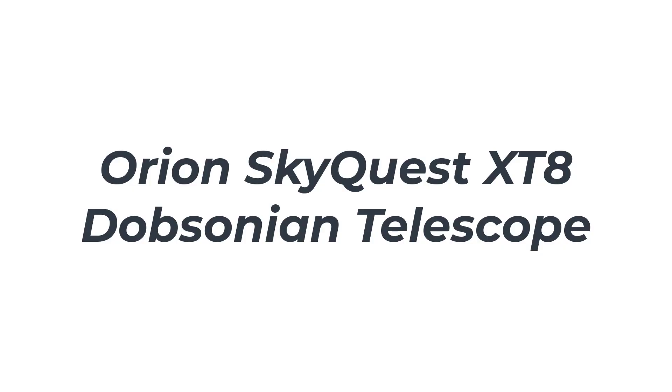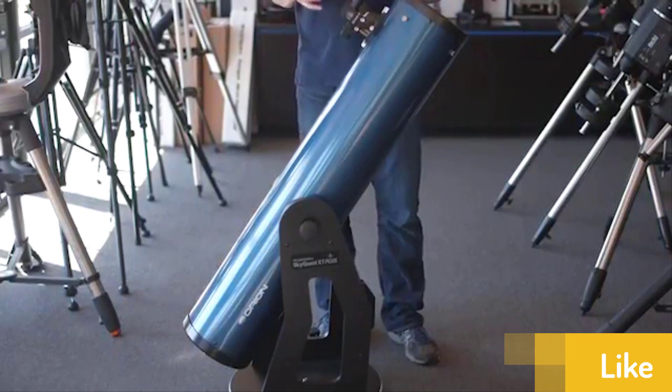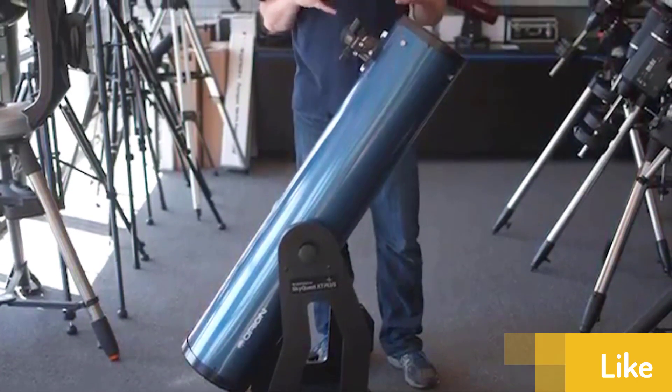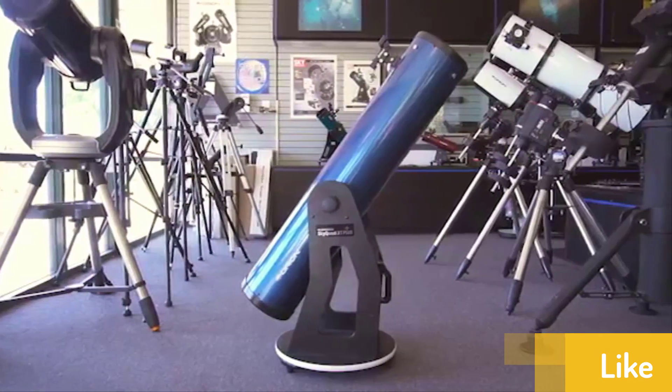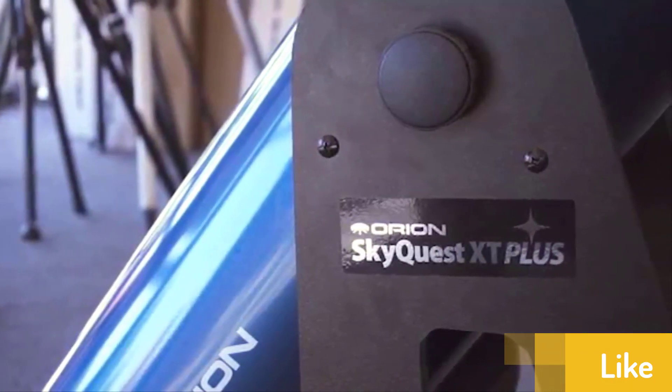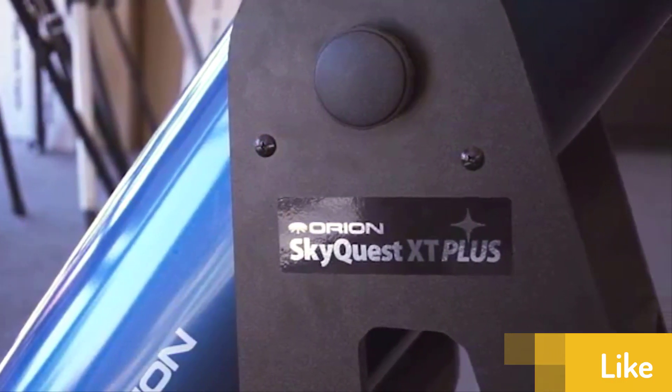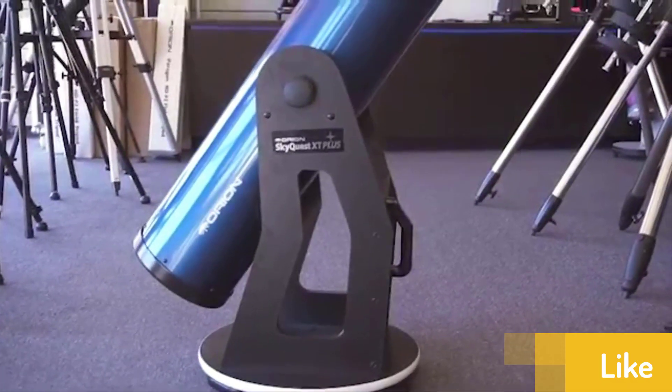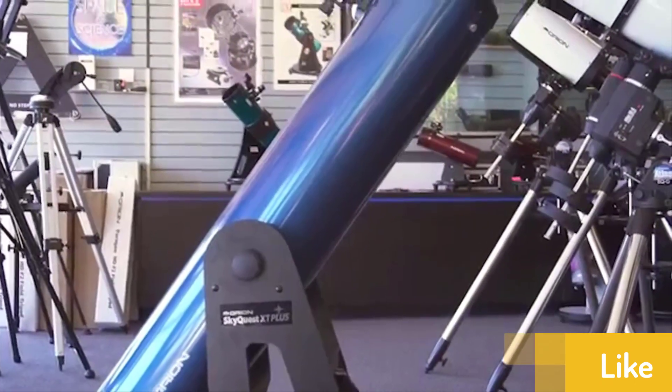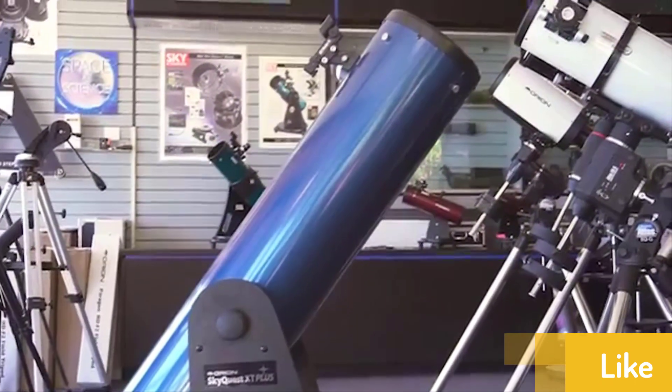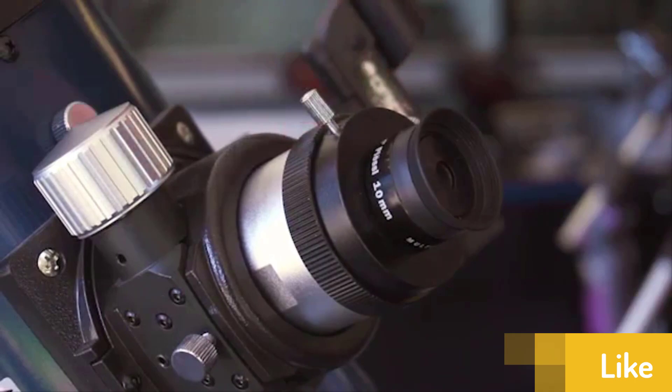Number three: Orion SkyQuest XT8 Dobsonian Telescope. The Orion 8974 SkyQuest XT8 Plus Dobsonian Reflector Telescope has a 2-inch dual speed Crayford focuser with 11:1 fine focusing abilities. It comes with two different eyepieces: one is a 2-inch 28 millimeter deep view eyepiece and the other is a 1.25 inch 10 millimeter Sirius Plossl eyepiece.